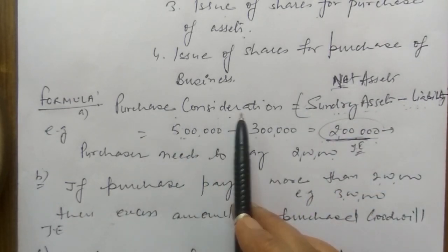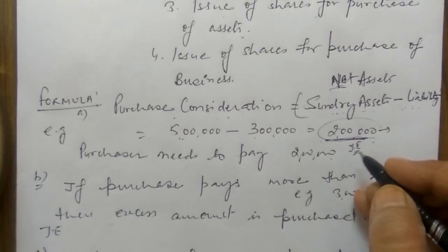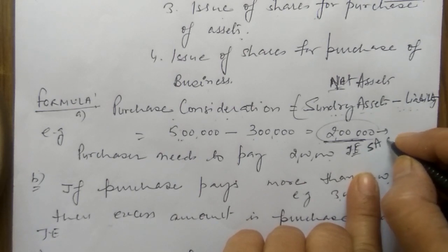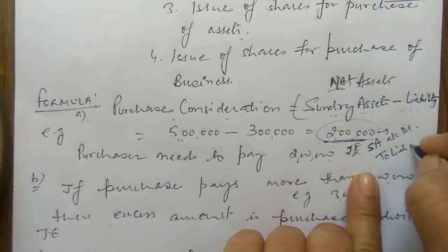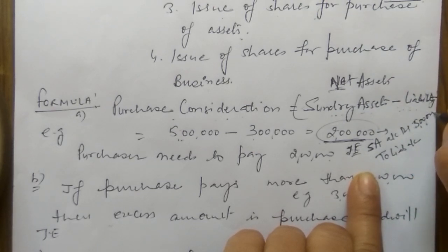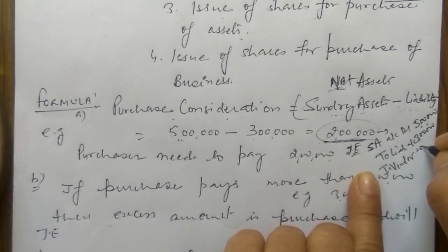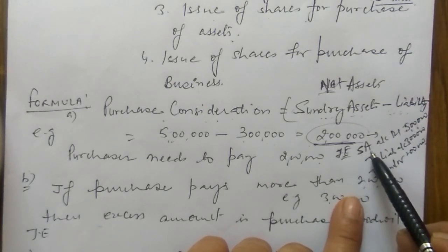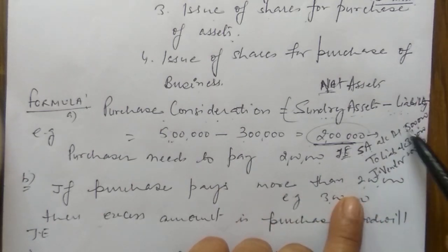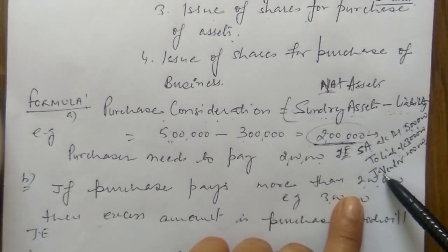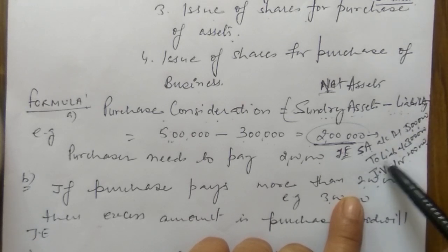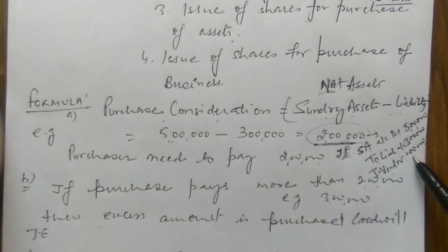The journal entry for this is: Sundry Assets Account Dr. ₹5 lakh; To Sundry Liabilities Account ₹3 lakh; To Vendor Account ₹2 lakh. Here assets are debited at ₹5 lakh, liabilities credited at ₹3 lakh, and vendor credited at ₹2 lakh (the purchase consideration). Debit must equal credit — this is the basic entry when purchase consideration equals net assets.